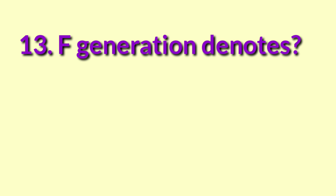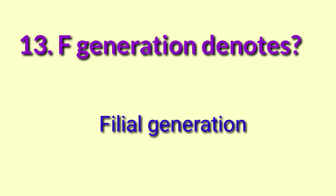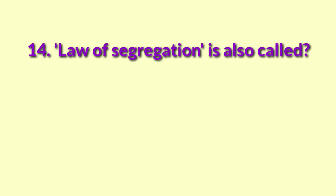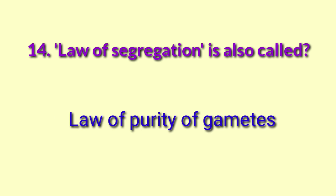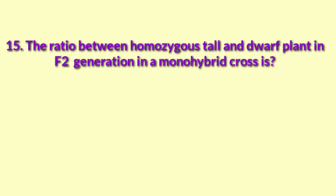F generation denotes filial generation. The law of segregation is also called the law of purity of gametes. The ratio between homozygous tall and dwarf plants in F2 generation in a monohybrid cross is 3:1.